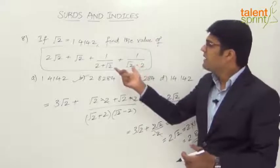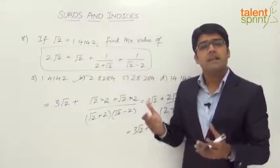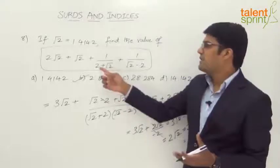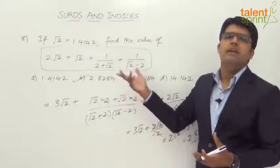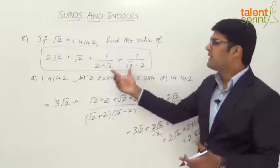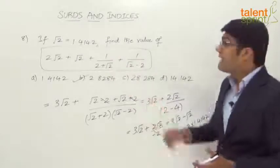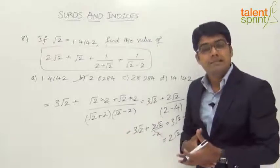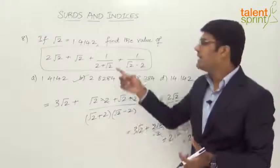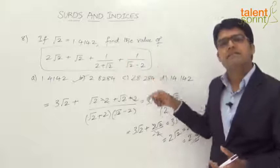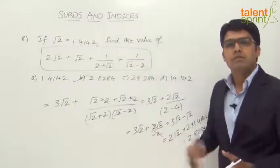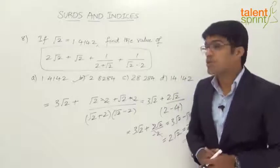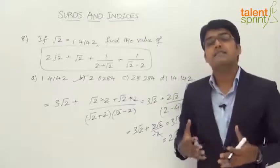Since the denominators were in the form (a + b) and (a − b), the surds get eliminated automatically when we take the LCM — we need not rationalize separately. If LCM cannot eliminate the surds, then we can rationalize the terms independently, as seen in the previous question, to find the final answer.